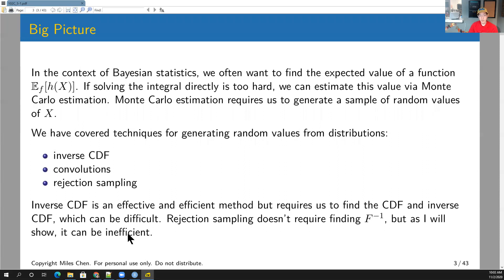We often want to find the expected value of some function h of x, where x comes from distribution f. This is usually some kind of integral where you take h of x multiplied by f of x. Sometimes solving that integral directly is too hard, so we can estimate it using Monte Carlo estimation — we generate a whole bunch of random values of x from this PDF f.